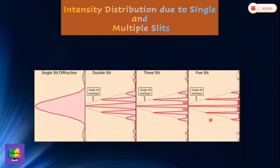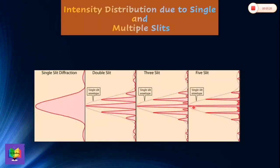These are intensity distribution curves due to single slit and multiple slits. This is due to a single slit. In case of double slit, this pattern is obtained; in case of three slits, this one; and in case of five slits, this pattern is obtained. It can be seen that maxima in case of multiple slits are of rapidly falling intensity and are well defined as the number of slits increases, compared to the pattern from a single slit.